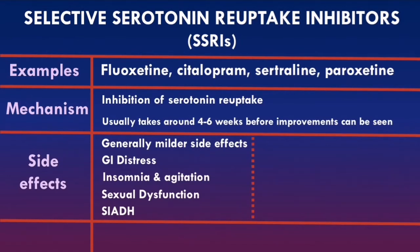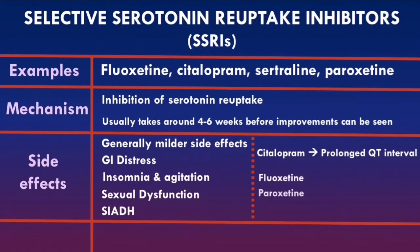There are some specific effects to remember. Citalopram can cause a prolonged QT interval, increasing the risk of cardiac arrhythmias. Fluoxetine and paroxetine are both potent cytochrome P450 inhibitors. These liver enzymes metabolize many drugs such as benzodiazepines and phenytoin, so inhibiting them reduces the elimination of those drugs, raises their blood concentration, and increases the risk of overdose. SSRIs are generally safe in overdose compared to other antidepressants.